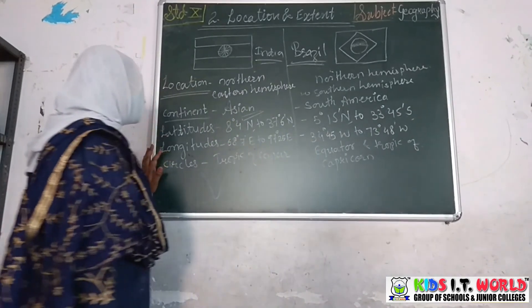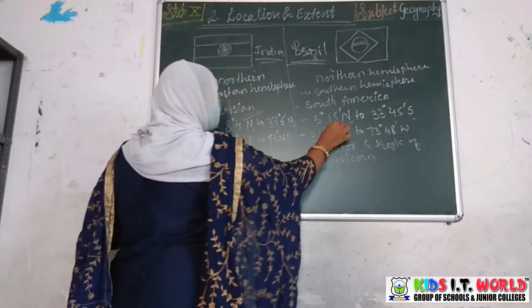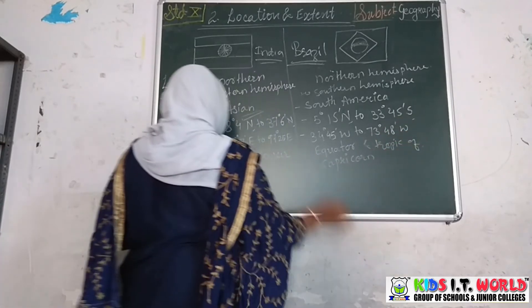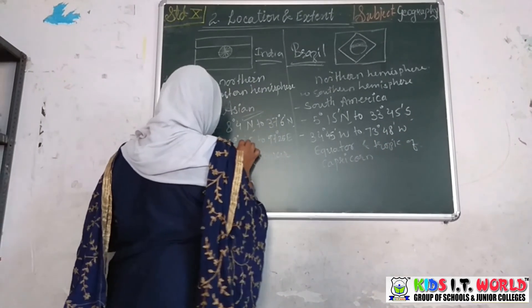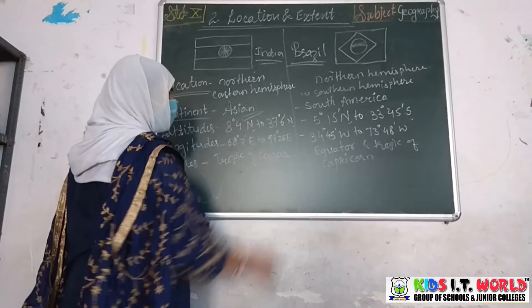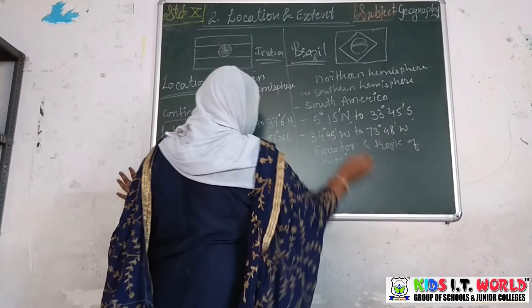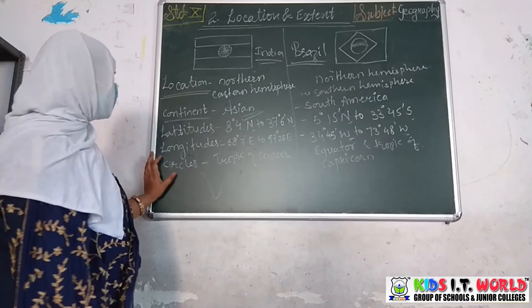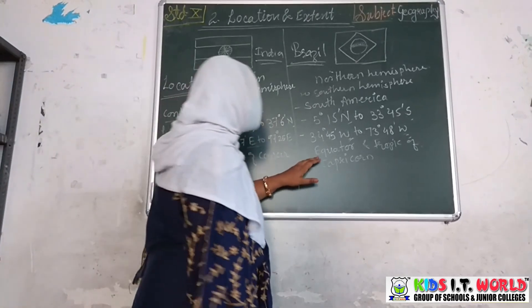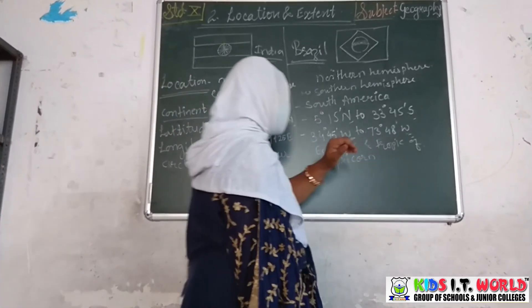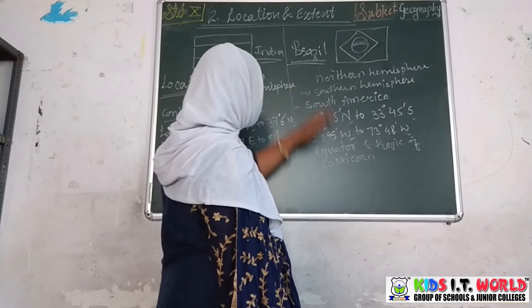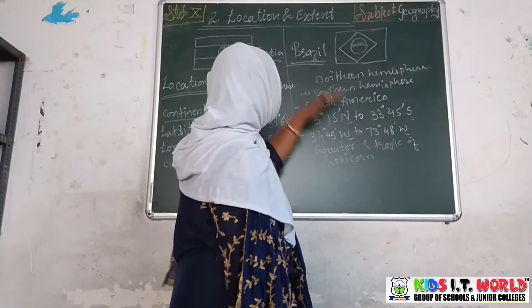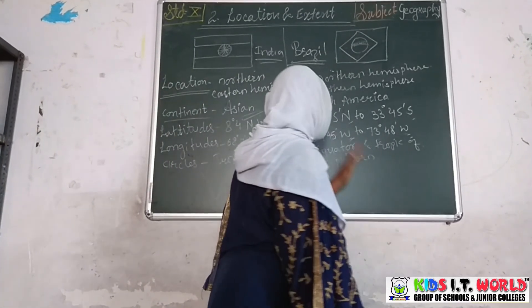India is located in the Eastern Hemisphere, whereas Brazil is located in the Western Hemisphere — that's why Brazil is taken for comparison. The circle passing through India is the Tropic of Cancer, whereas for Brazil, the Equator and the Tropic of Capricorn both pass through it. On the north side the equator passes, and on the south side of Brazil you can observe the Tropic of Capricorn passing through Brazil.